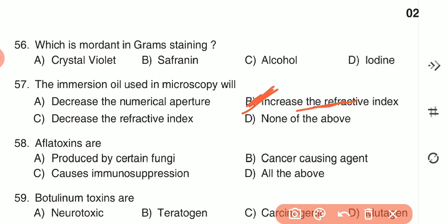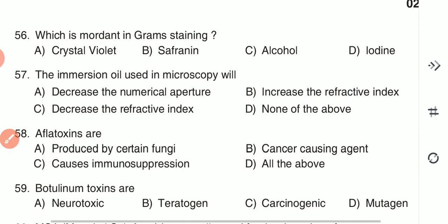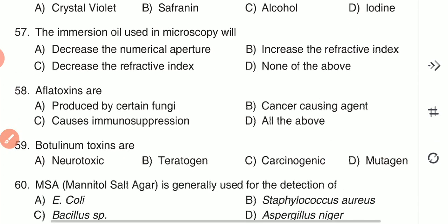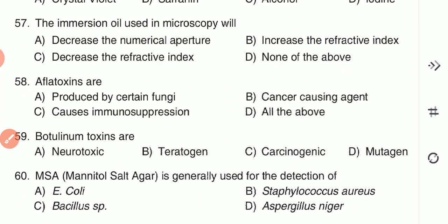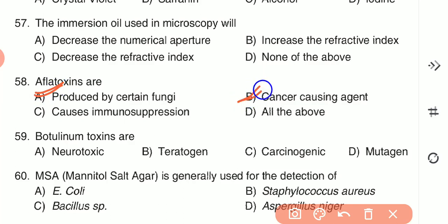Question 58: Aflatoxins are — (A) produced by certain fungi, (B) cancer-causing agents, (C) cause immunosuppression, or (D) all of the above. Aflatoxins are produced by fungi, are cancer-causing agents, and cause immunosuppression — all of the above is the correct answer.